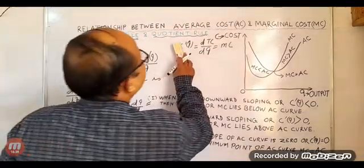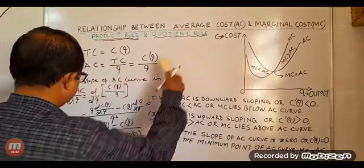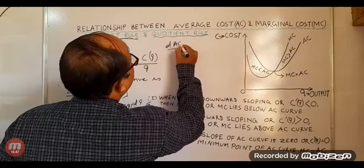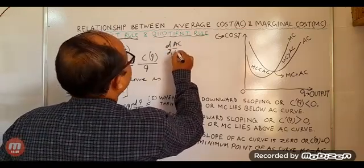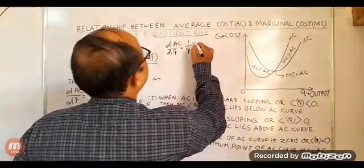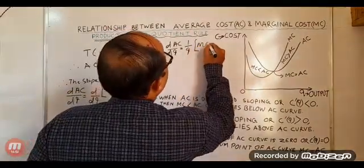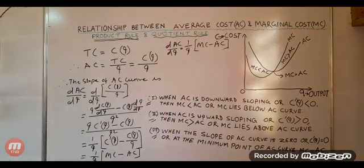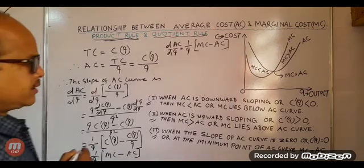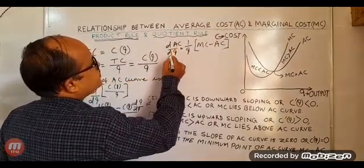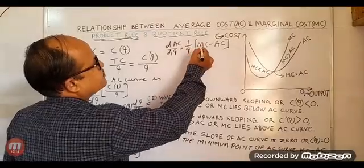So we get dAC/dQ equals (1/Q) times [MC minus AC], since C'(Q) equals MC and C(Q)/Q equals AC.